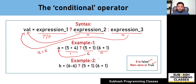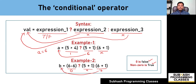In example two, expression one before the question mark must result in either a true or false condition. In this case, six minus six becomes zero, and zero is considered as false in C language. Therefore, expression two will get ignored and expression three will get evaluated. Six plus one becomes seven, and the value of seven will get stored into variable b. So b equals seven. In example one, the value of a is six, and in example two, the value of b is seven.